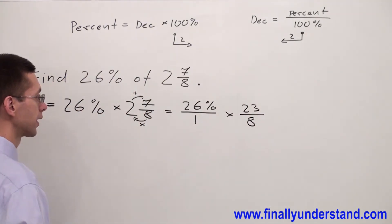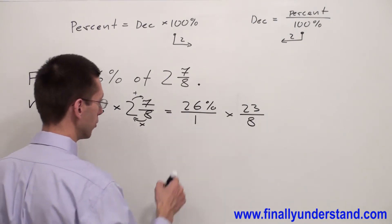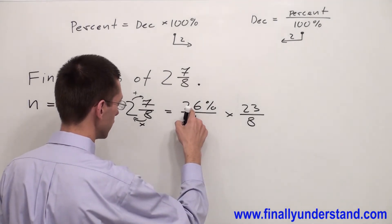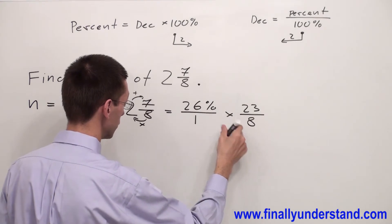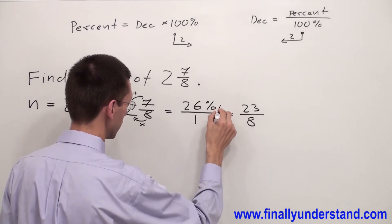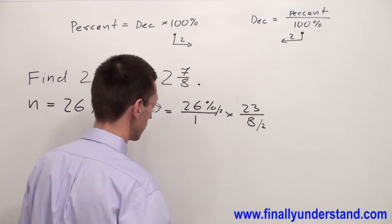Next, anytime you multiply fractions you have to check if you can reduce any numerator with any denominator. Please notice that 26 is an even number and 8 is also an even number. Both of them are divisible by 2, so I'm going to divide them by 2.